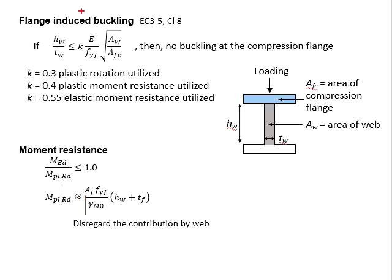For the flange-induced buckling, you have used these equations during the preliminary sizing analysis. However, during that stage, we normally assume this A-web to A-flange ratio to be equal to 1.